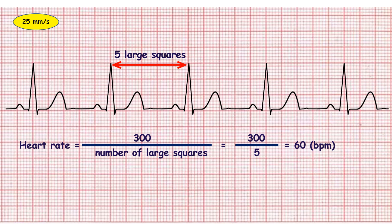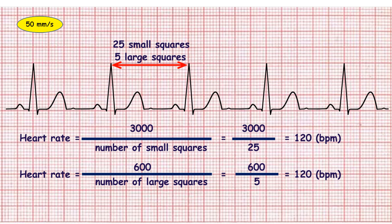Also you can calculate the number of large squares, then divide 300 by the number of large squares. If ECG speed is 50 millimeters per second, divide 3000 by the number of small squares, or divide 600 by the number of large squares.